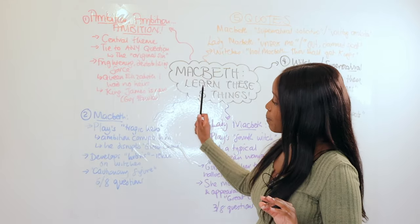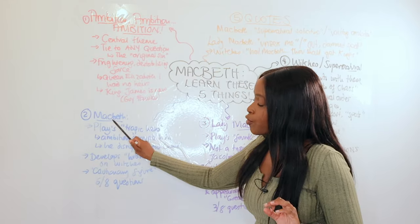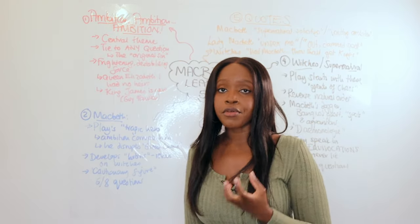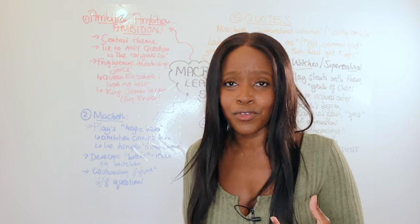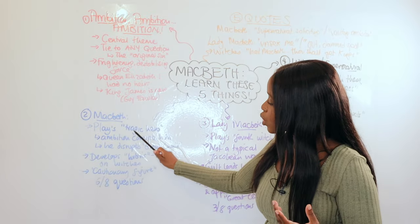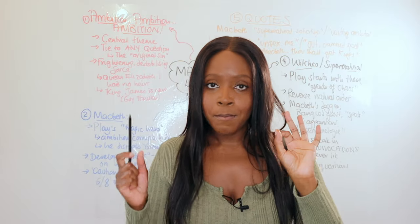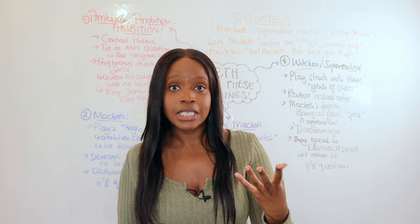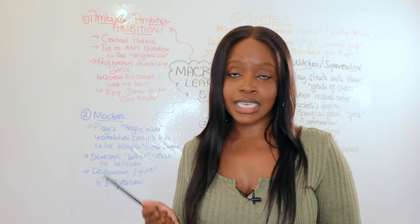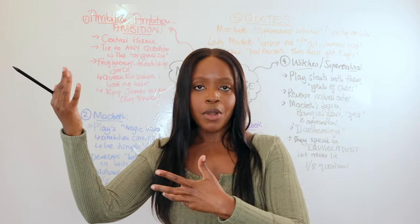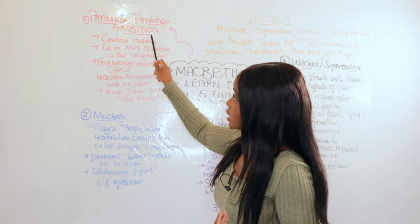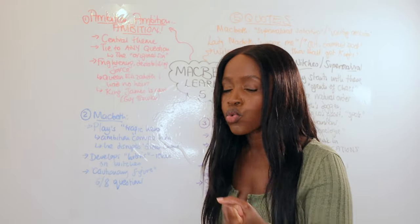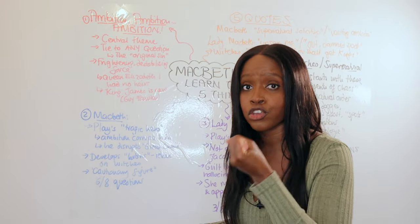Number two: Macbeth's character is very important — the play is named after him. When talking about him, make sure you highlight these keywords: he is the play's tragic hero. A tragic hero is a main character of high status — Macbeth was a thane — who has a flaw within them. In his case, ambition leads him to make a series of mistakes and then to his downfall. Make sure you use that language: Macbeth is the play's tragic hero.